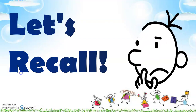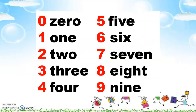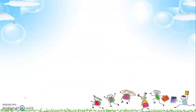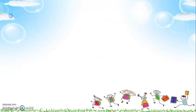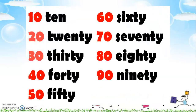Let's recall — we have here the numerical symbols and their number words. We have zero, one, two, three, four, five, six, seven, eight, and nine. We also have ten, eleven, twelve, thirteen, fourteen, fifteen, sixteen, seventeen, eighteen, and nineteen.